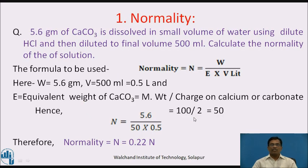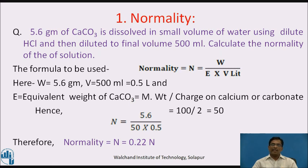Let us solve some numericals based on normality, molarity, and molality. First, based on normality: 5.6 grams of calcium carbonate is dissolved in a small volume of water using dilute hydrochloric acid and then diluted to a final volume of 500 ml. Calculate the normality of the solution. The formula to be used is: normality = weight / (equivalent weight × volume in liters).